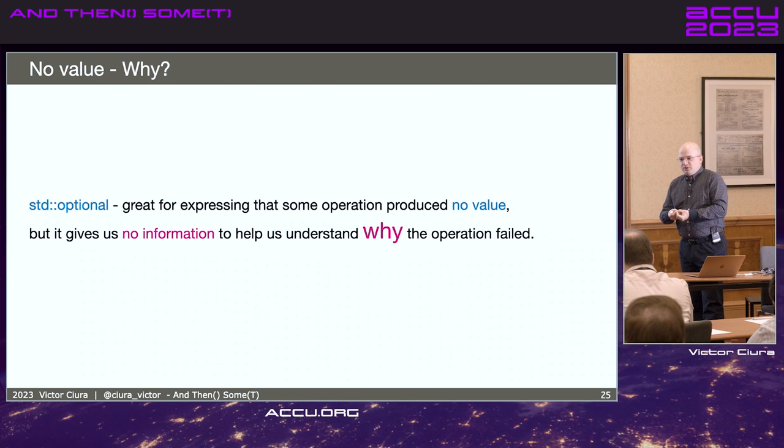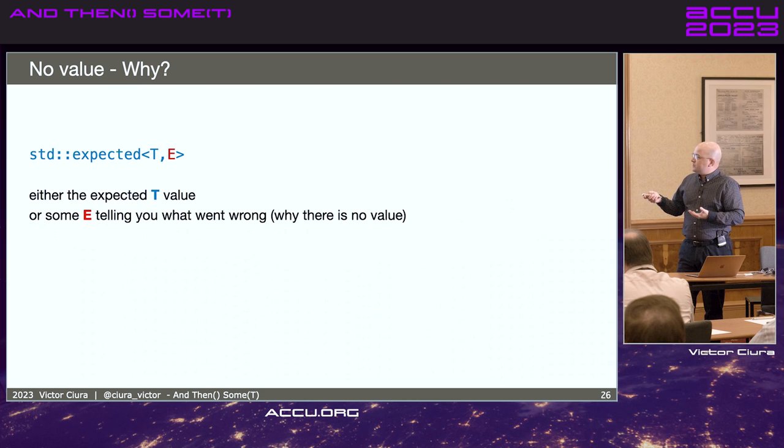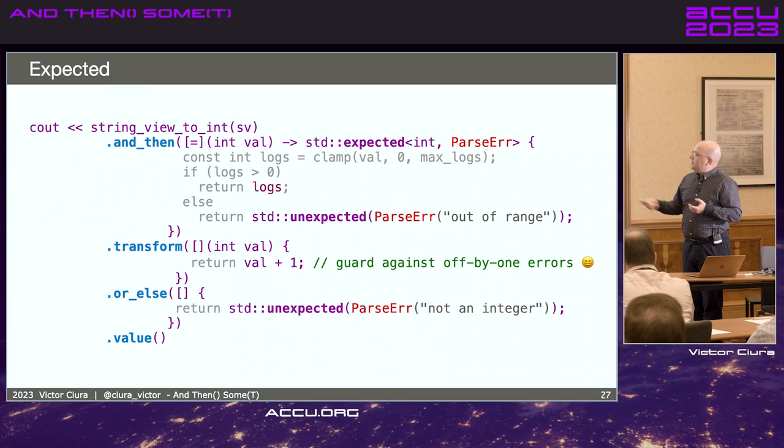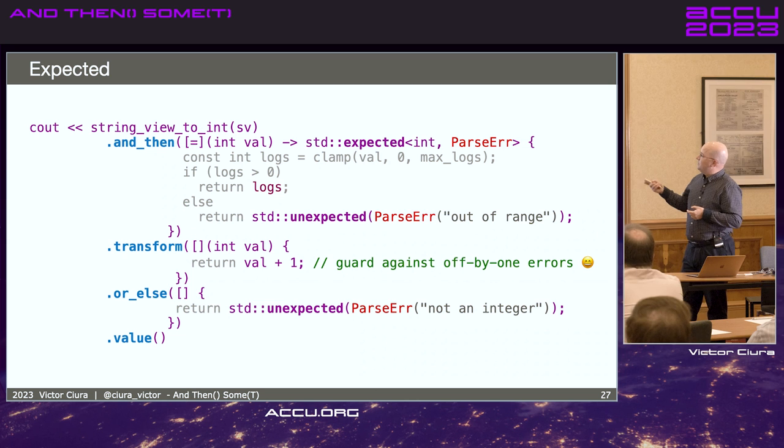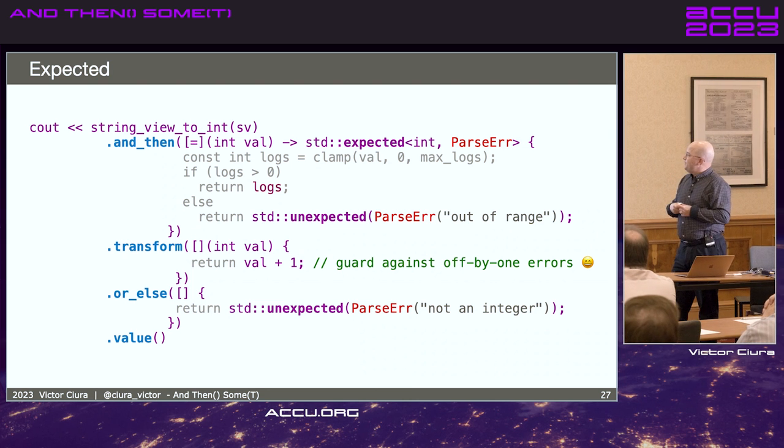We've seen how optional might not hold the value in the context in such a chain of operations. But we don't always know why. So sometimes it gives us no information about why we don't have a value in that optional and at which point. And if we want some contextual information about when we are in a situation where we don't have a value, we need to use something else. And that something else is standard expected in C++ 23, which either has the expected value, T, or some kind of E-type, some kind of error type, that has additional information about why we're not holding a value at a particular point.